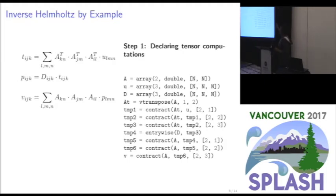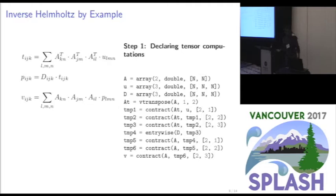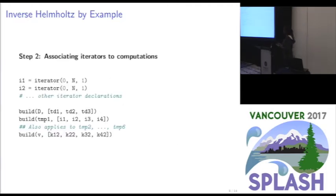Inverse Helmholtz has a series of tensor contractions and an entrywise multiplication, then another tensor contraction. We already assume we know the order in which we'll evaluate the tensor contractions, so we declare the succession of contractions with respect to this evaluation order. We have two kinds: simple N-dimensional arrays like A, U, and D, and tensors from tmp1 to tmp6, which imply loop domains that have to be manipulated.